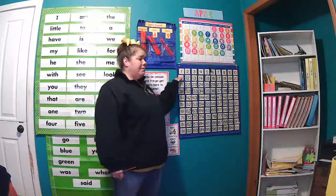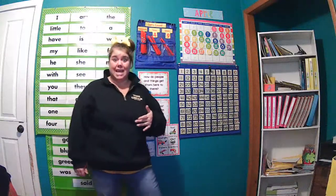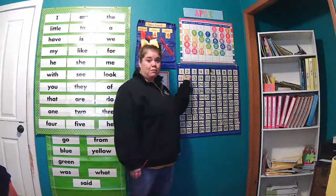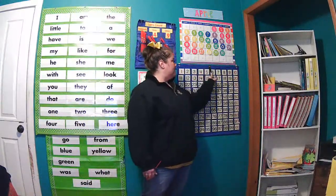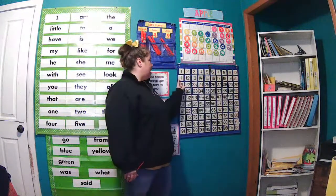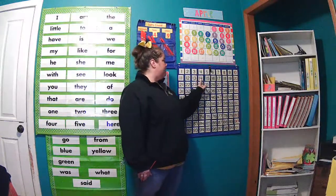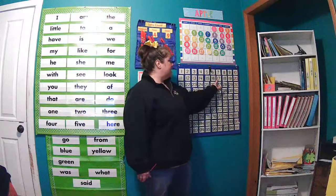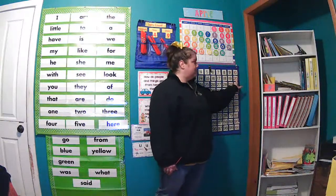Let's take a look at these top rows of numbers and count up to 20 the say-10 way, just to practice and refresh. So we count the first row regular: 1, 2, 3, 4, 5, 6, 7, 8, 9, 10. Now we say 10-1, 10-2, 10-3, 10-4, 10-5, 10-6, 10-7, 10-8, 10-9, 2 tens.